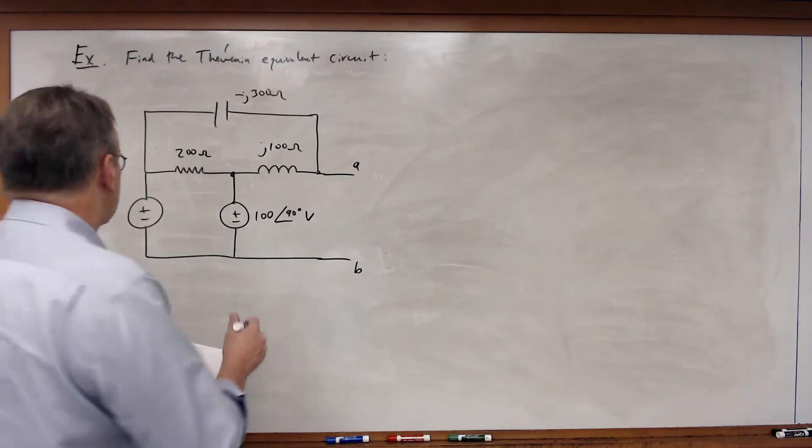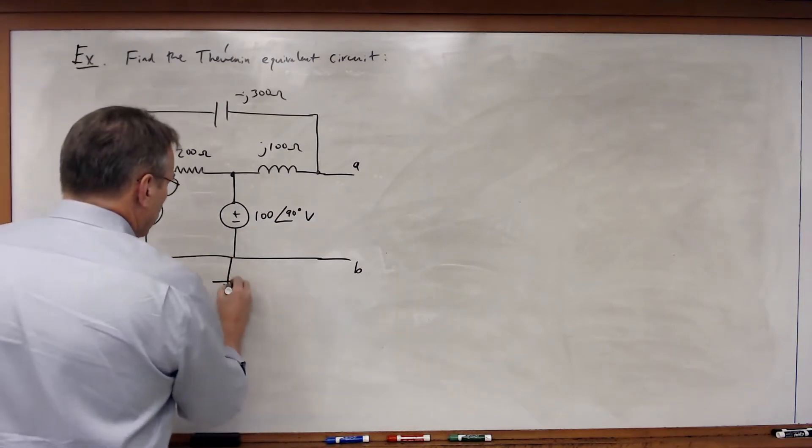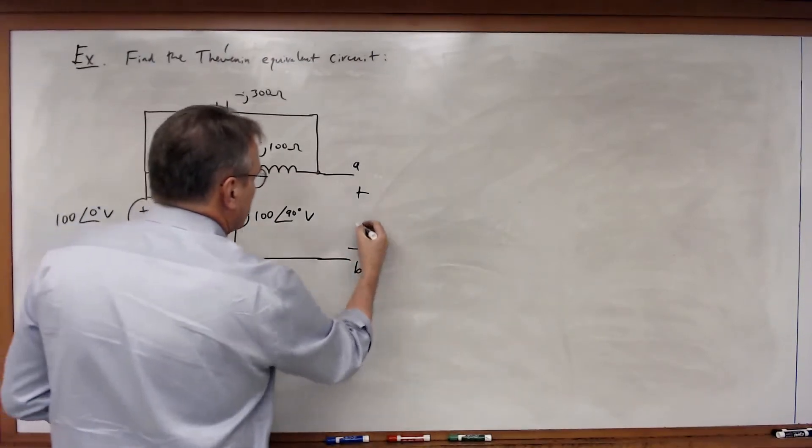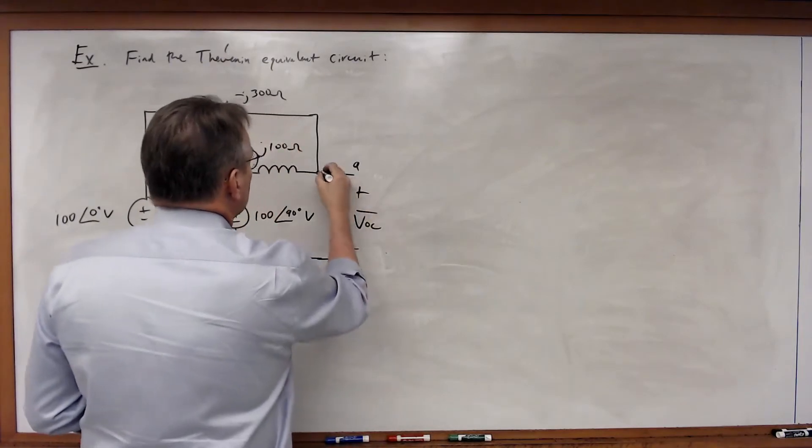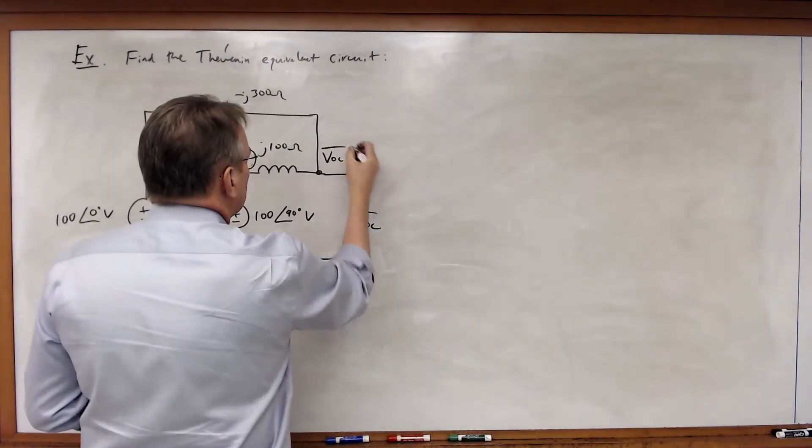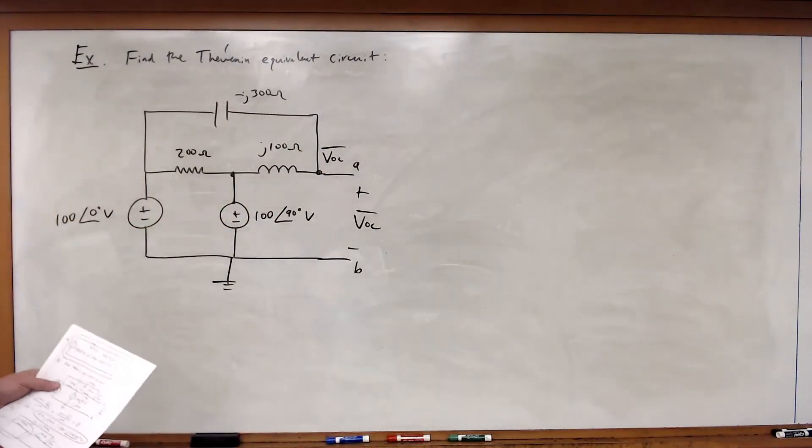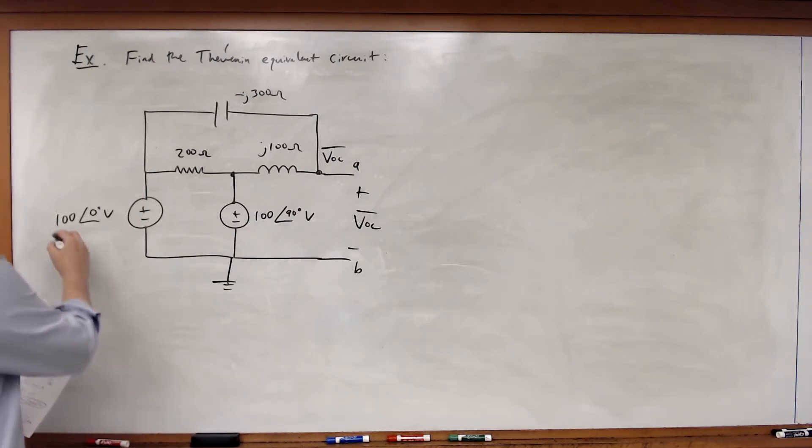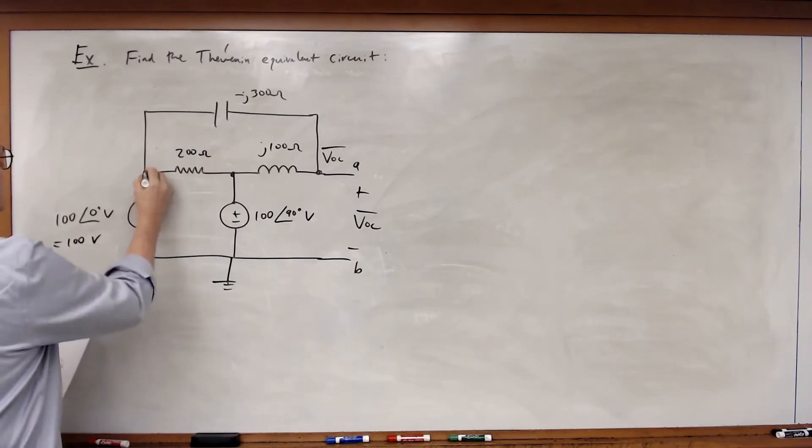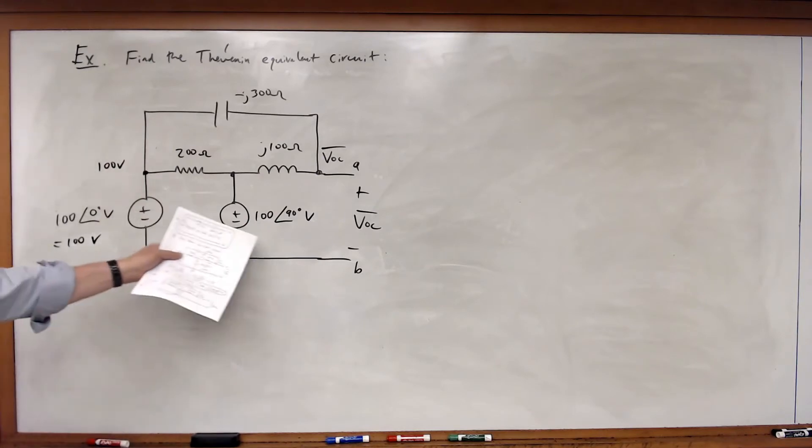I'm going to ground the bottom node. I want to find VOC, so this node voltage becomes equal to VOC. In this case, 100∠0° volts is just equal to 100 volts, which means that's a defined node. And 100∠90° means that's equal to 100 cos(90°) plus